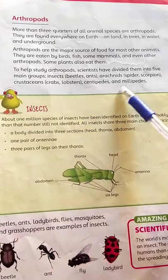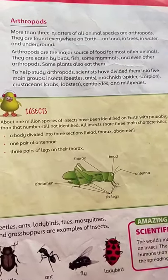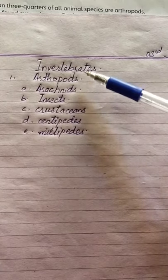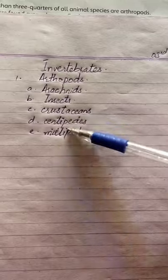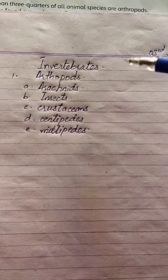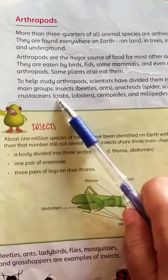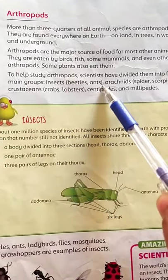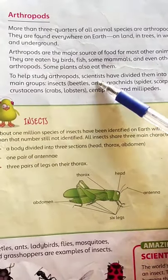Arthropods are divided into 5 other subgroups. The first subgroup is insects, which includes beetles, ants, honeybees, and ladybirds, along with other small insects.